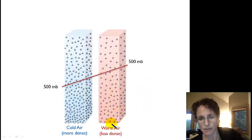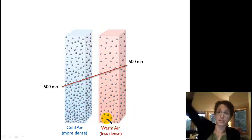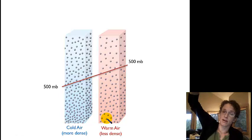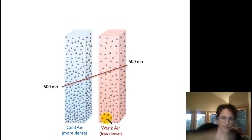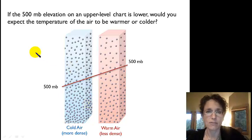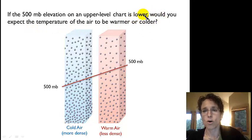As a reminder: a warm air column is less dense and spreads out, so that 500 millibar level is higher. Cold air squishes down, so the 500 millibar level is lower. Therefore, if a 500 millibar elevation on an upper level chart is lower, we would expect the temperature to be colder.